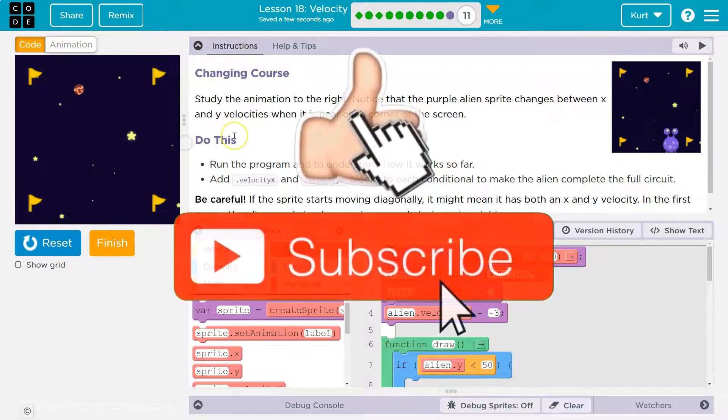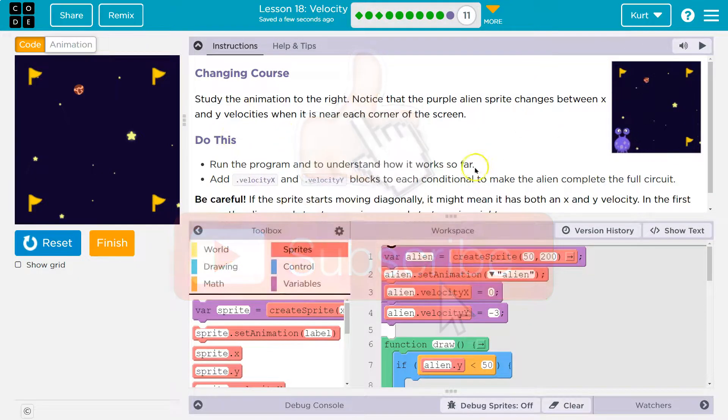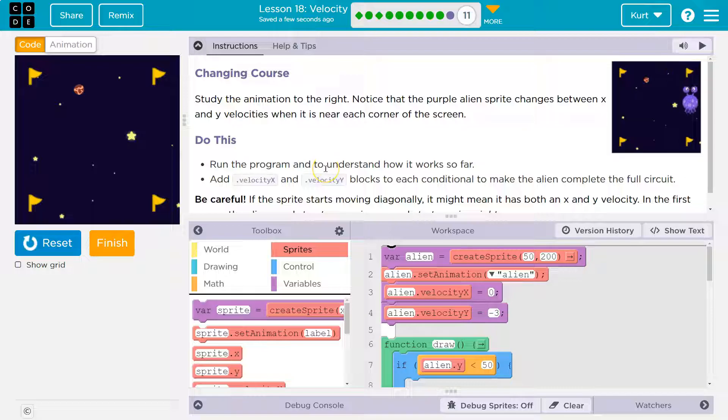Yeah, so when it's going up or down, that's a Y velocity, right or left is an X. When it's near each corner of the screen. Yep, I do notice that. Run the program to understand what it does so far. Add the velocity X and velocity Y blocks to each conditional, and remember conditional means if statement because you're checking a condition to make the alien complete the circuit.